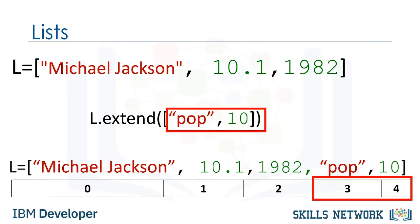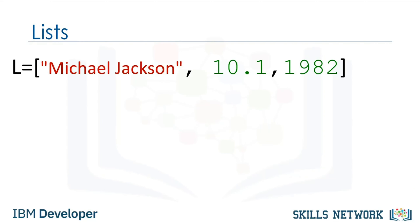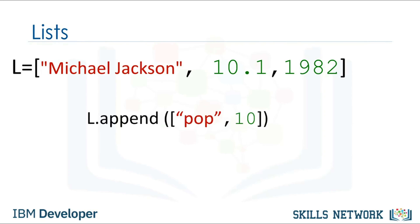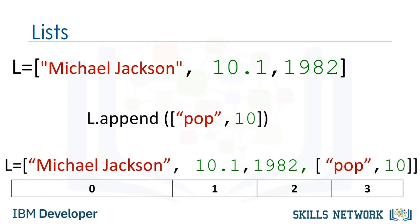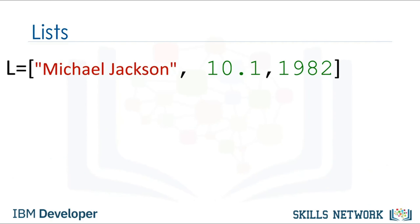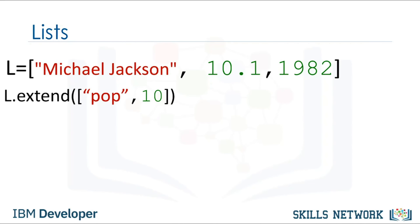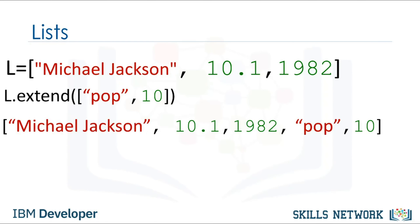To learn more about methods, check out our video on objects and classes. Another similar method is append. If we apply append instead of extend, we add one element to the list. If we look at the index, there is only one more element — index 3 contains the list we appended. Every time we apply a method, the list changes. If we apply extend, we add two new elements to the list.